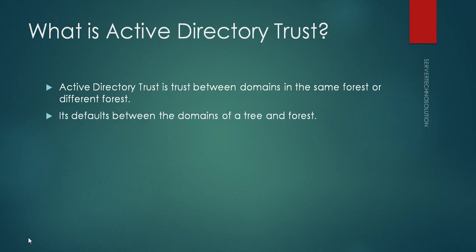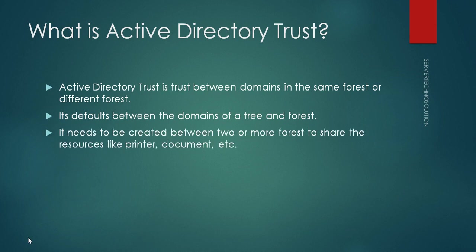Trust is default between domains of the same tree or forest. For example, if we have a forest called servertechnosolution.com and promote a few other domains below it, there will be a default trust between them, and they will share resources with each other — like printers, or users will be able to see each other's data.